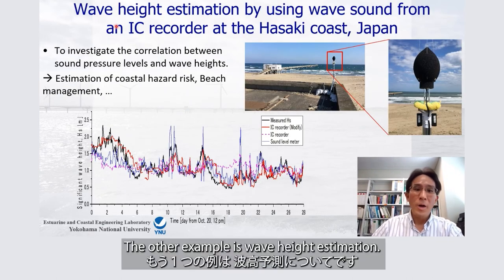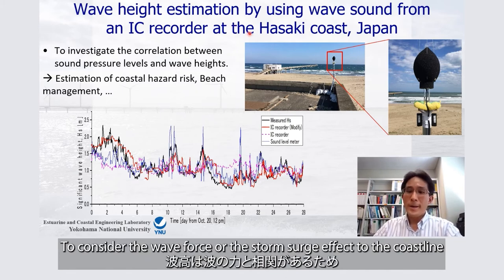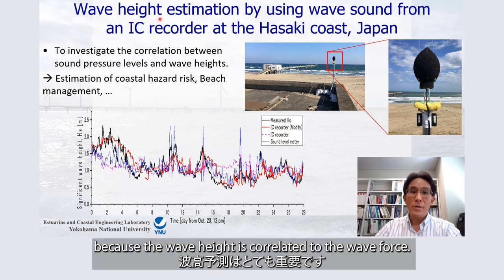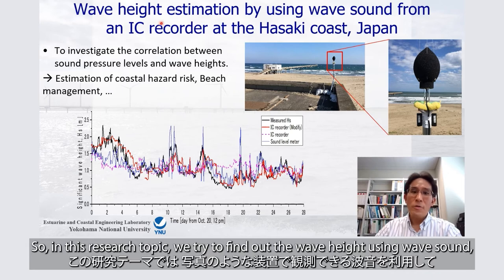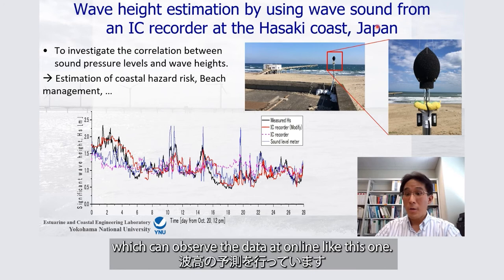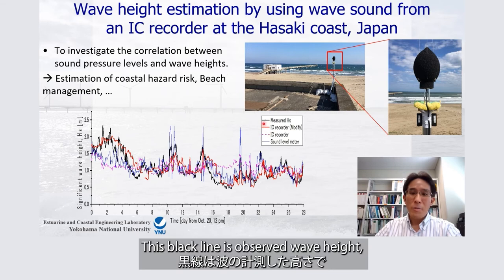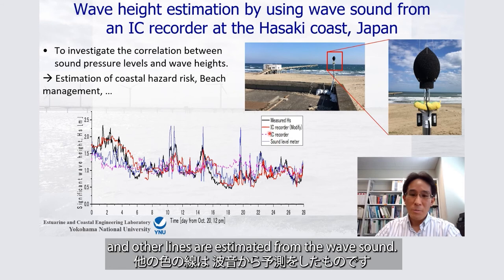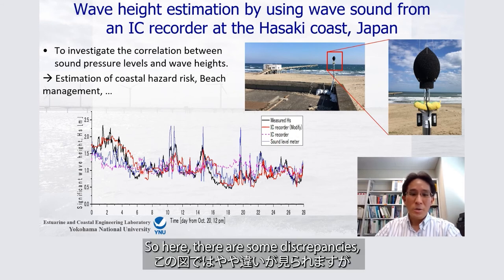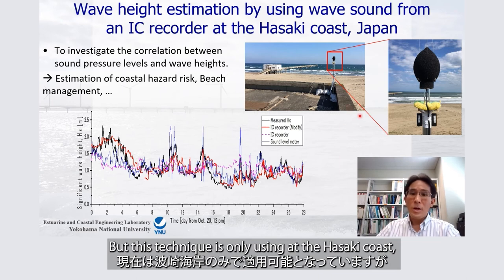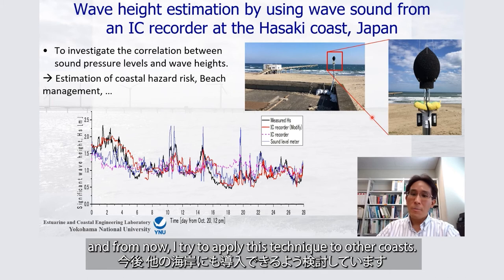Another example is wave height estimation. Estimating wave height is crucial for assessing wave force and storm surge effects on coastlines, since wave height is correlated to wave force. We try to estimate wave height using wave sound data observed online. Results show fairly good agreement between observed and estimated wave heights, with some discrepancies. This technique has been tested at the Hazaki coast, and I am now working to apply it to other locations.